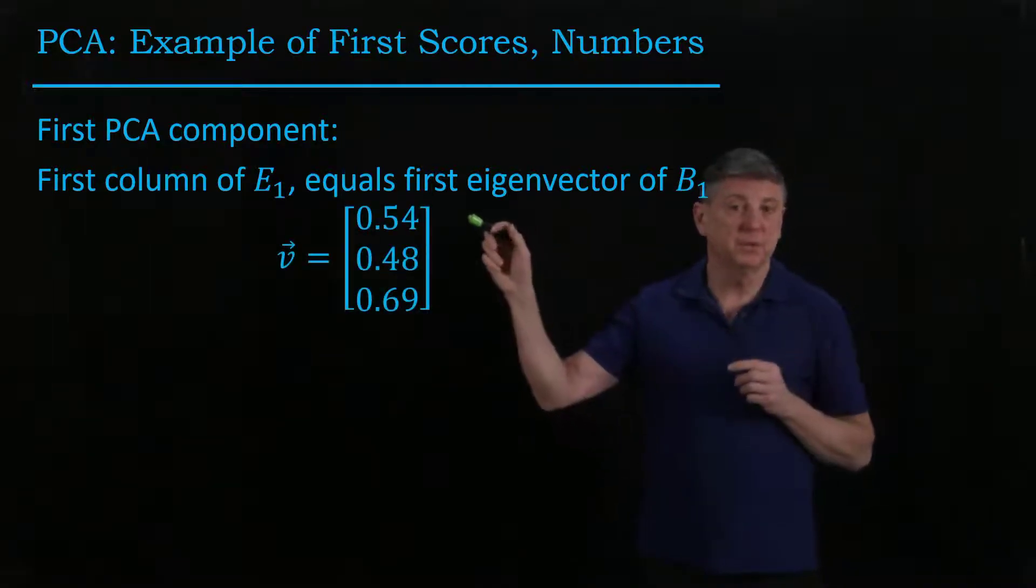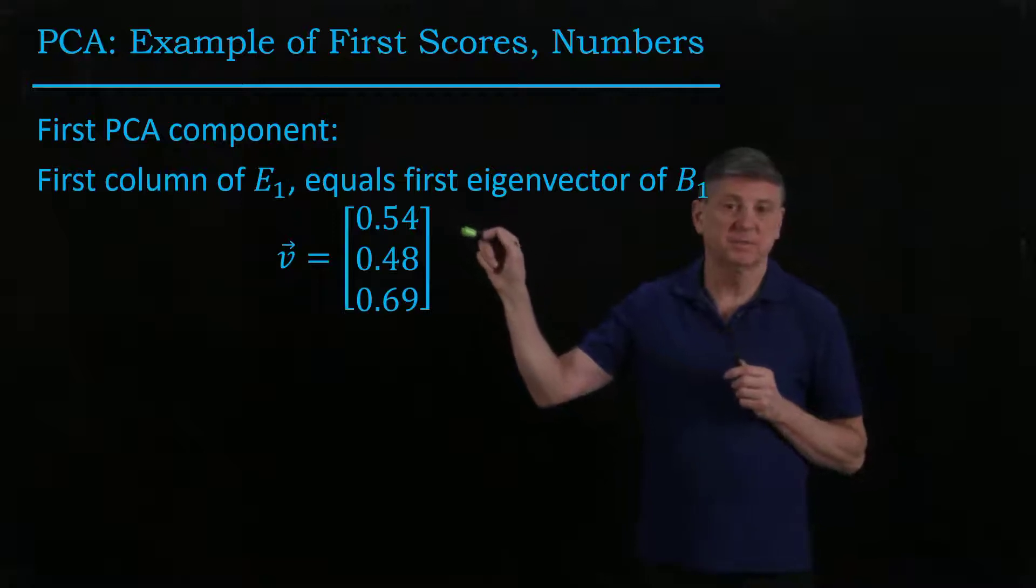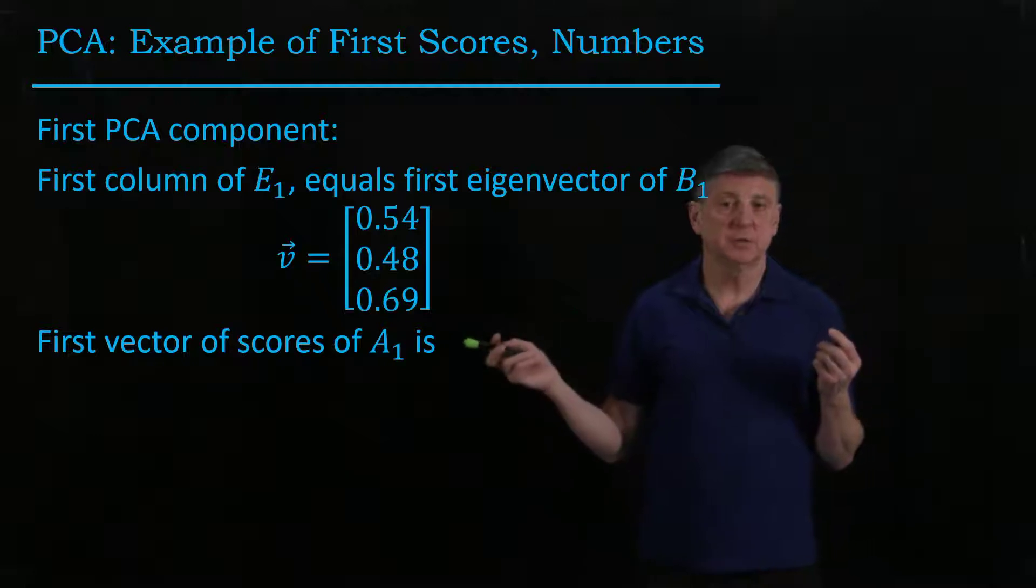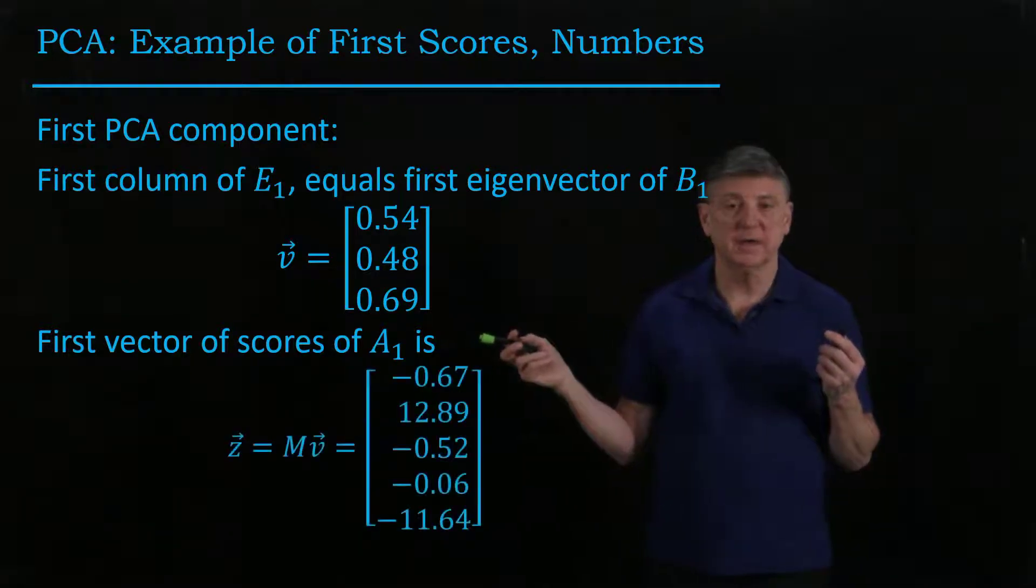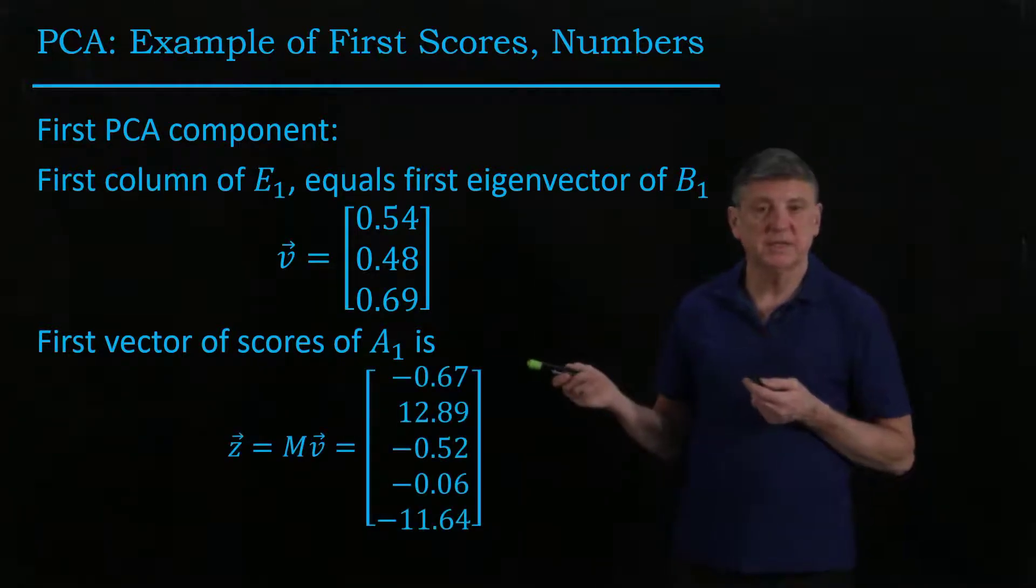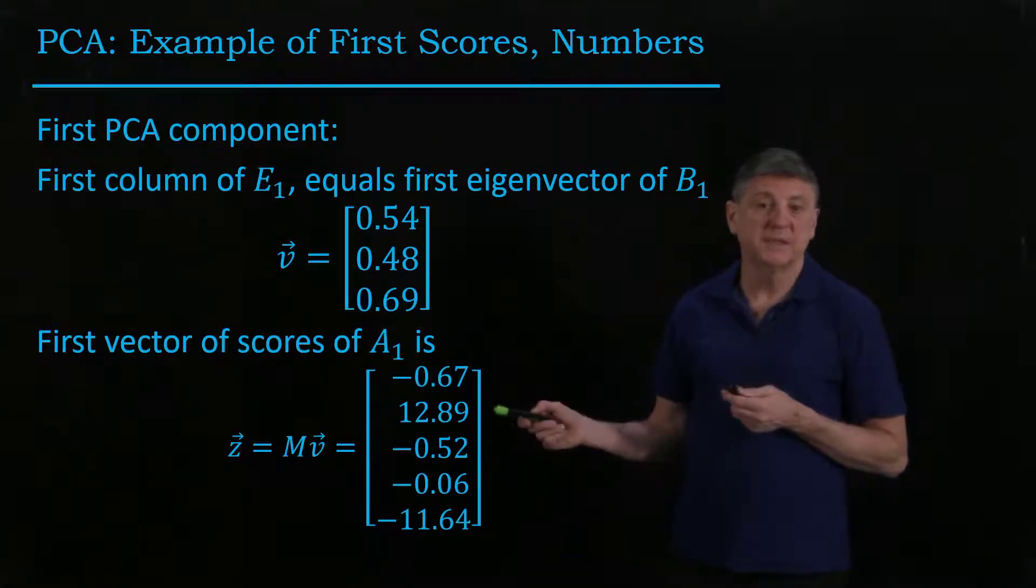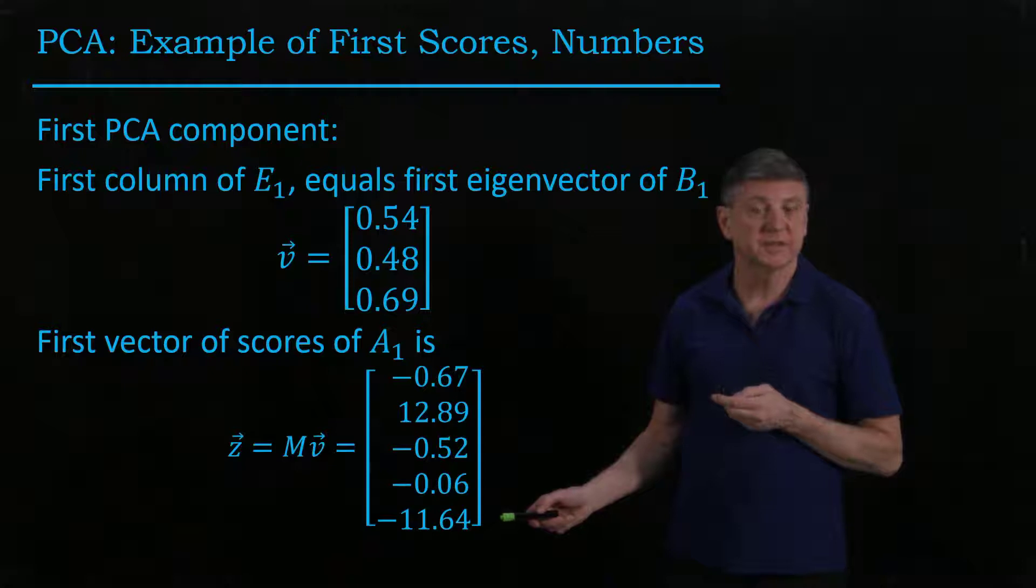When we computed this, we got approximately 0.5, 0.5, 0.7. If we then score the zero mean version of our data, we see that three of these numbers are pretty close to zero, and one is significantly positive, and one is significantly negative.